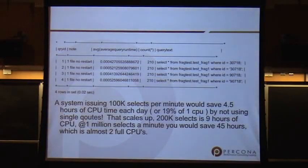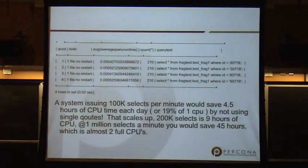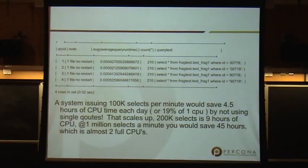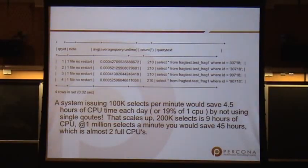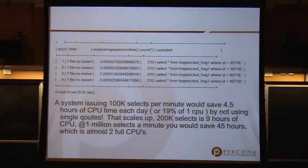Imagine if you've got millions of queries running against the system. Looking at the top versus the bottom, that's maybe 10 microseconds difference — relatively small. But 10 microseconds times 100,000 selects a minute times the course of the day, and you end up wasting an entire CPU just doing conversions.